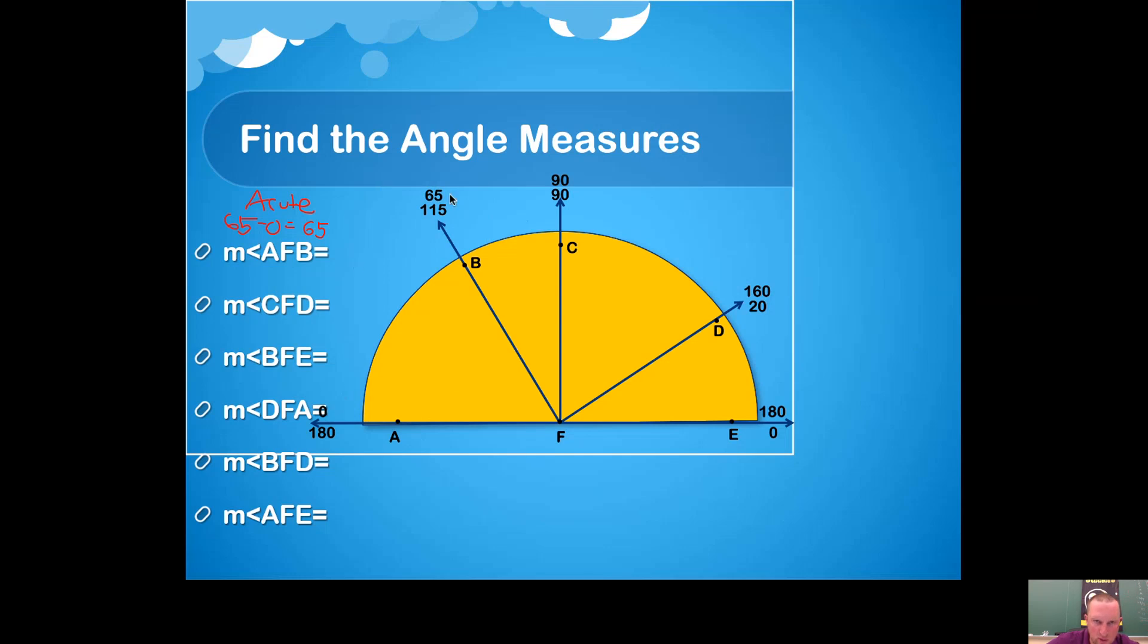Okay, let's try the next one. Measure of angle CFD—that's how you read this. Here's angle CFD. It sure does look like an acute angle again. Now we need its measure, so we need to subtract some numbers. We can do 160 minus 90.